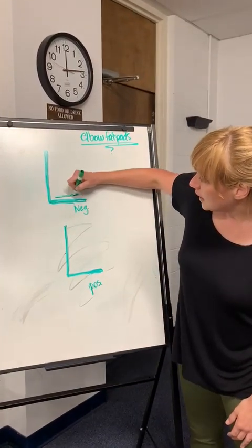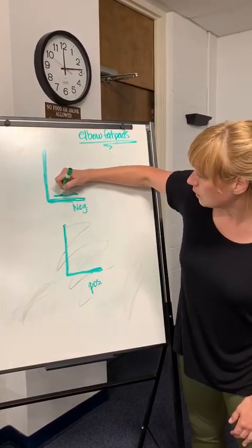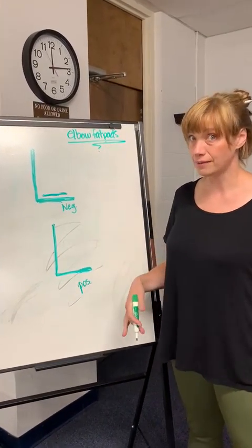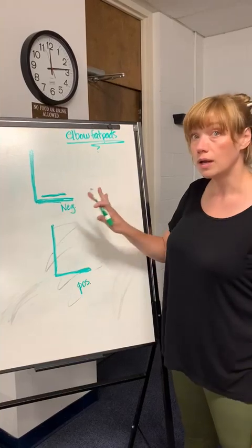So this line right here, forearm humerus, on the forearm would be called a supinator fat pad. That is normal on a negative.